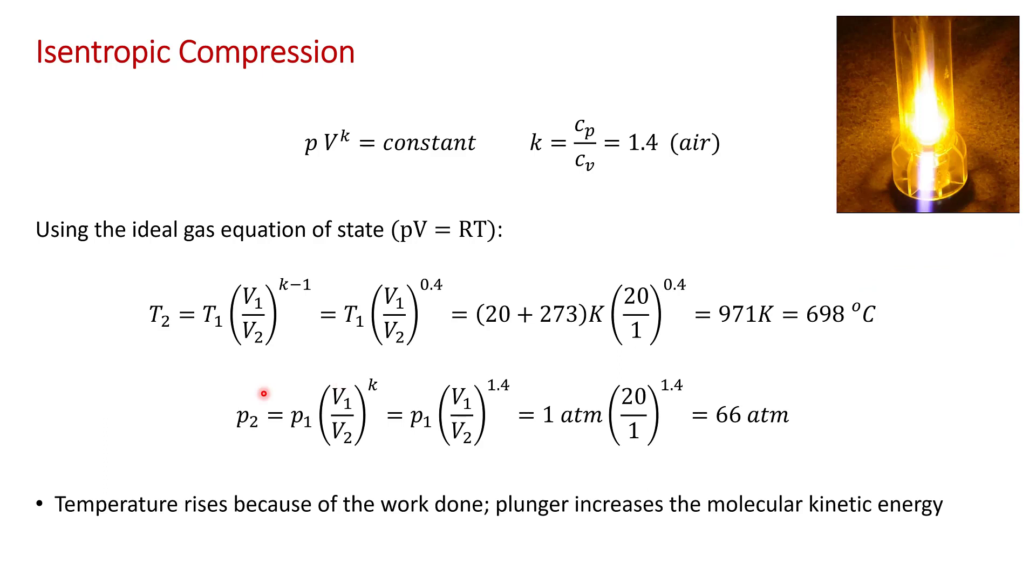You can do a similar analysis for the pressure and show that the final pressure is equal to the initial pressure times the compression ratio raised to the power of k. The initial pressure in the cylinder is one atmosphere and again the compression ratio is 20 to 1 raised to the power of 1.4 gives a final pressure at the point of maximum temperature of 66 atmospheres.